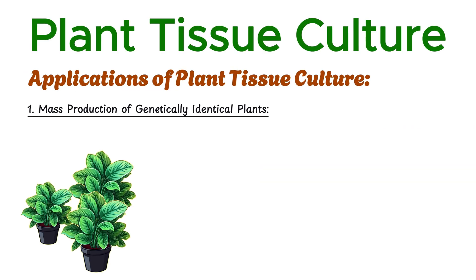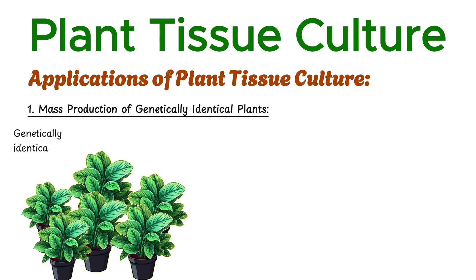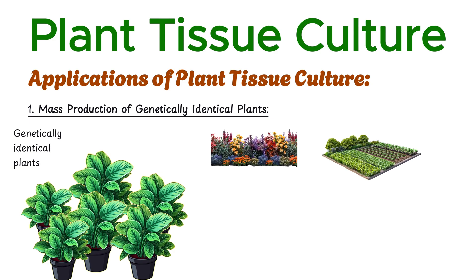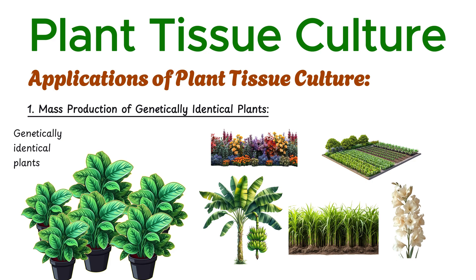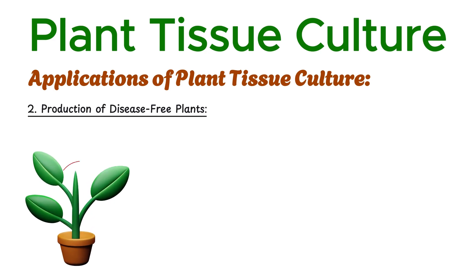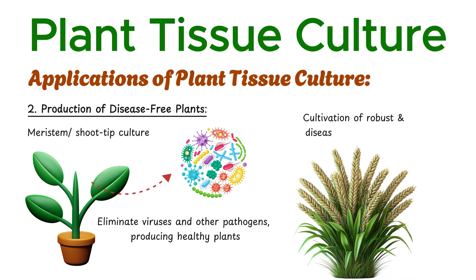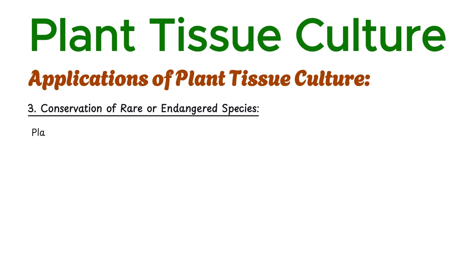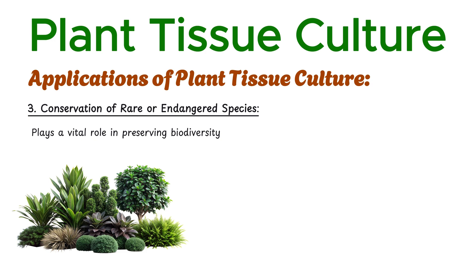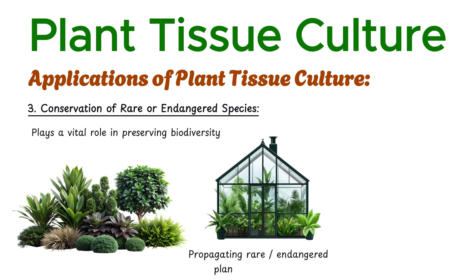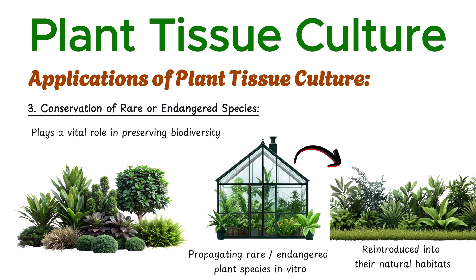Tissue culture enables the rapid production of large numbers of genetically identical plants. This technique is extensively applied in horticulture and agriculture for crops like bananas, sugarcane, and orchids, ensuring uniformity and high-quality yields. Using meristem or shoot-tip culture, scientists can eliminate viruses and other pathogens, producing healthy plants — a method critical for ensuring robust and disease-resistant crops. Tissue culture also plays a vital role in preserving biodiversity by propagating rare or endangered plant species in vitro, which can later be reintroduced into their natural habitats.